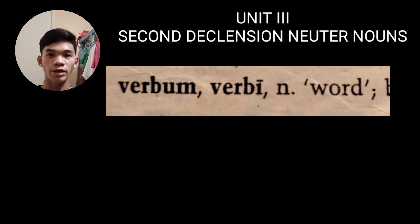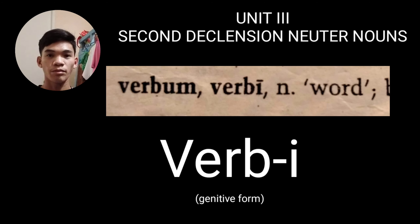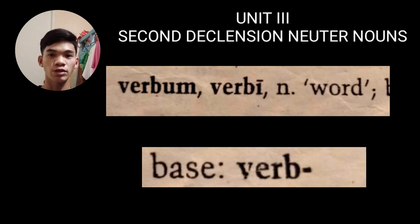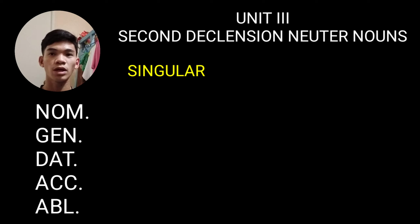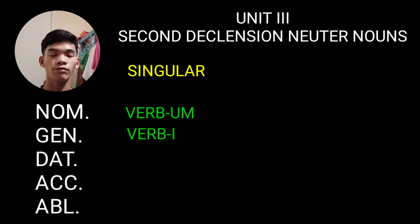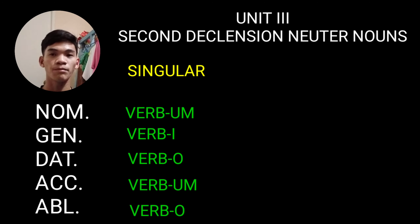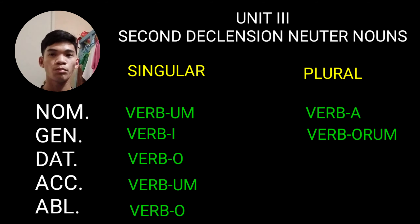For example, the Latin word verbum, verbi — a second declension noun which means 'word.' To decline it, we derive the base by removing the -i ending from its genitive form, verbi. So we have the base verb-. Then we add the designated endings for neuter nouns. For singular nominative, it will become verbum. For singular genitive, it will become verbi. For singular dative, it will become verbo. For singular accusative, it will become verbum. For singular ablative, it will become verbo.